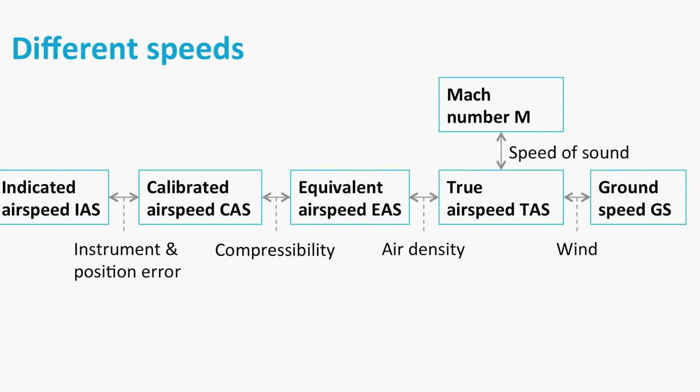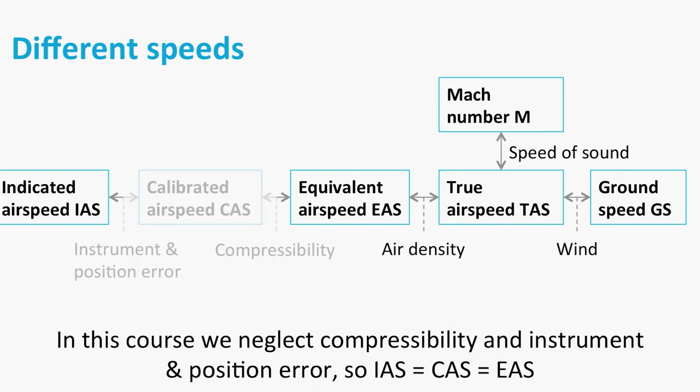So in our course we can assume that the equivalent air speed and the indicated air speed is the same. So we will use them instead of each other. And if I say indicated air speed in an exercise, you can assume that this is equal to the equivalent air speed, it is an ideal instrument and there is no compressibility.